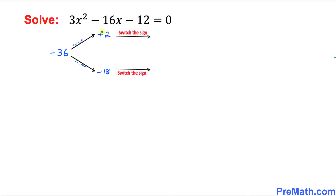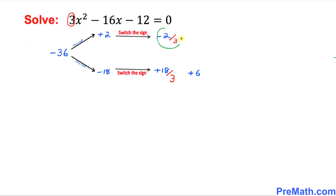And in the next step we are going to change the sign of these numbers. So this positive 2 becomes negative 2 and this negative 18 is going to become positive 18. The final step is to divide those numbers by the leading coefficient, which is 3. So negative 2 divided by 3 and positive 18 divided by 3, and we can see that 18 over 3 gives us positive 6 and negative 2 over 3 cannot be reduced. So our solutions are negative 2 thirds and positive 6.